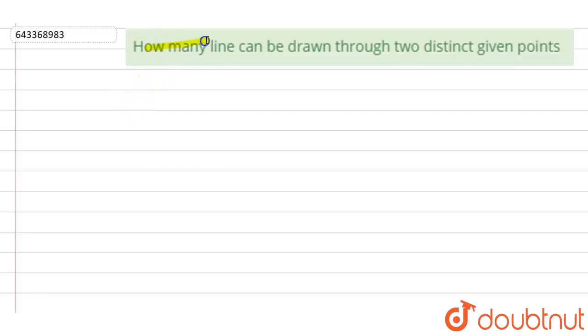The question says that how many lines can be drawn through two distinct given points. So in this question we have to find the total number of count of lines that can be drawn from two different points.